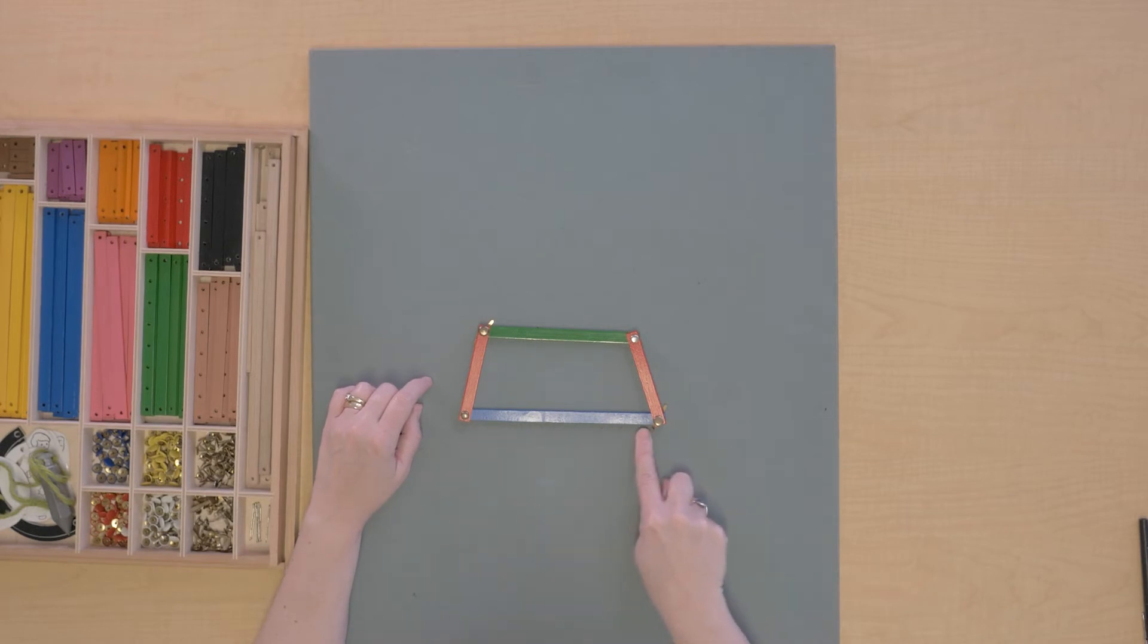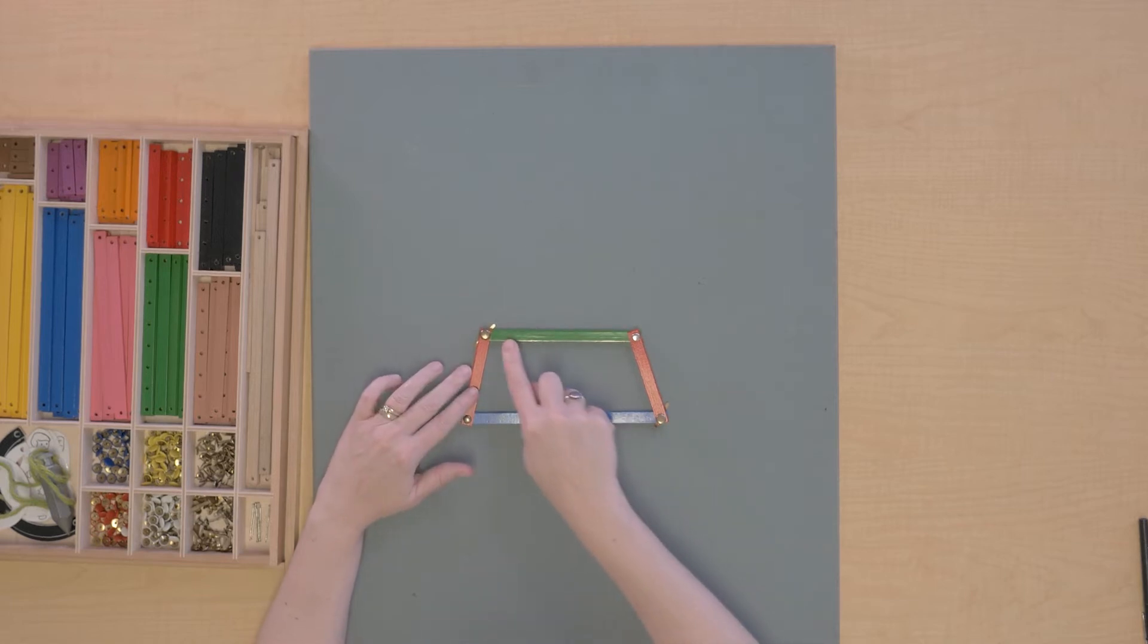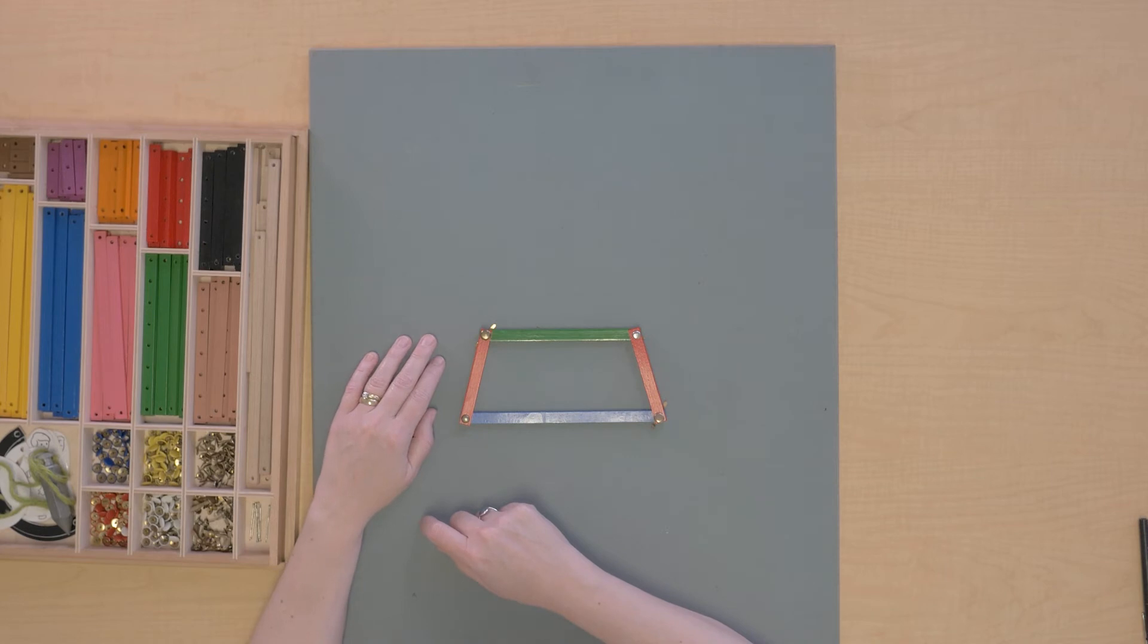This part of the trapezoid is called the major base and it's the major base because it is longer than this part of the trapezoid, which is the minor base.